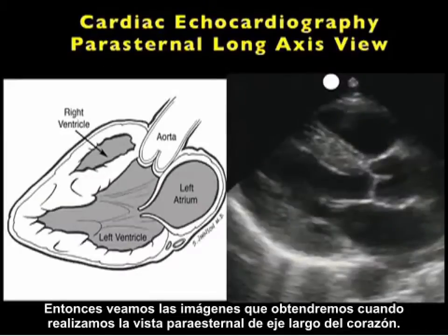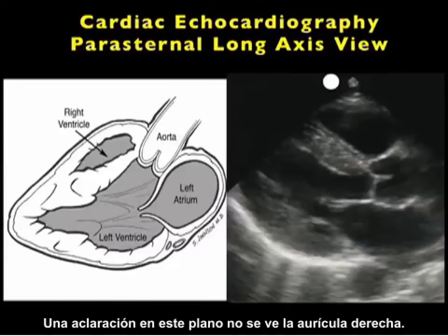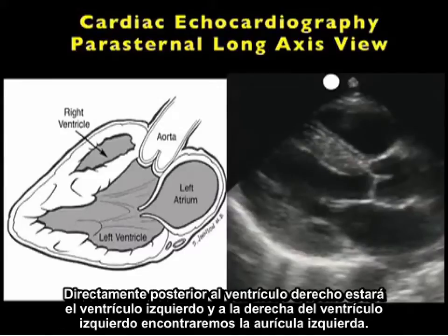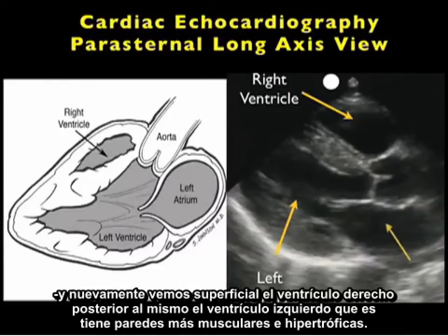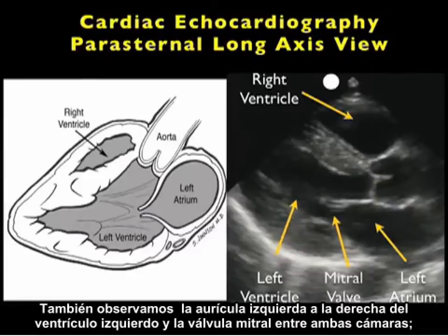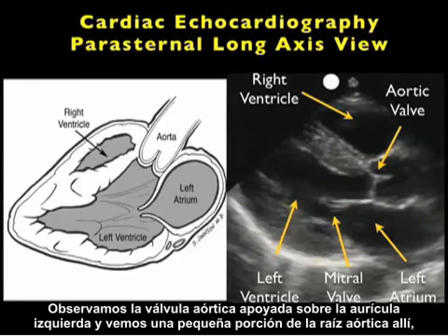Now let's take a look at the images we'll obtain by performing the parasternal long axis view of the heart. Here's a nice pictorial to the left, and what we see is that the most superficial structure will be the right ventricle. Notice that the right atrium is not seen from this plane. Directly posterior to the right ventricle will be the left ventricle, and to the right of the left ventricle will be seen the left atrium. We can also see the mitral valve in between the left atrium and the left ventricle, and a little bit of the aorta above the left atrium. Looking at the ultrasound still image to the right, we again see the superficial right ventricle. Posterior, we see the left ventricle with its more muscular and hypertrophic walls. Notice the left atrium to the right of the left ventricle and the mitral valve in between the two chambers — we categorize this as the left ventricular inflow tract. Note the aortic valve sitting right above the left atrium, and we see a little bit of the aortic root there. This is what we categorize as the aortic outflow tract.